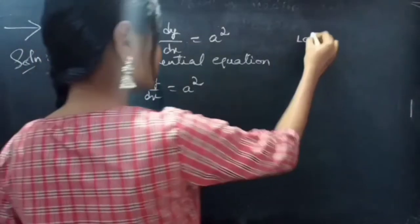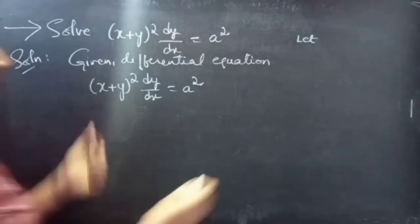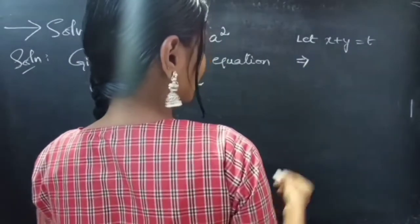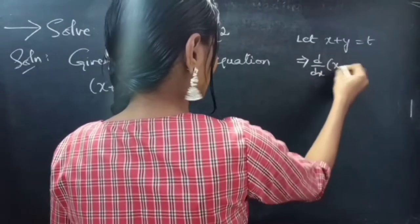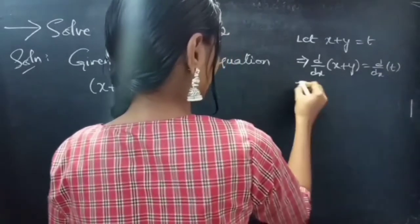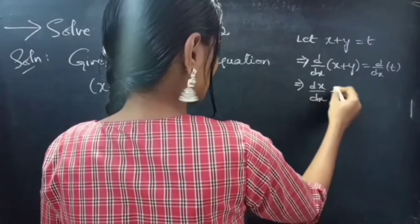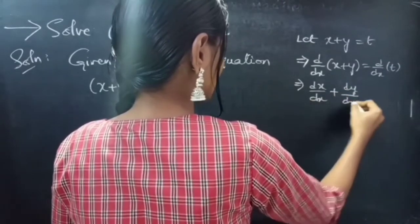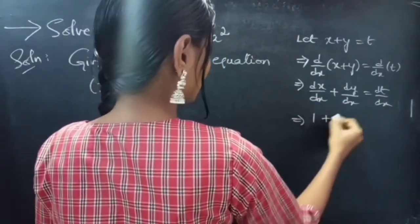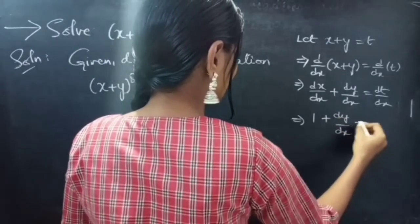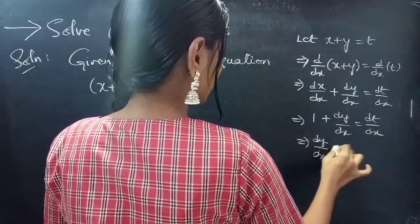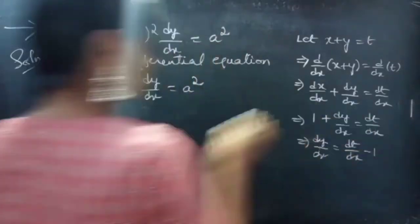Let x + y = t. Now differentiate both sides with respect to x. The derivative of x with respect to x plus the derivative of y with respect to x equals the derivative of t with respect to x. Since the derivative of x with respect to x is 1, we get 1 + dy/dx = dt/dx. Therefore, dy/dx = dt/dx − 1.